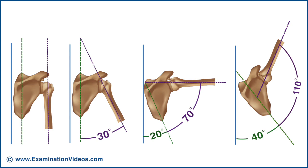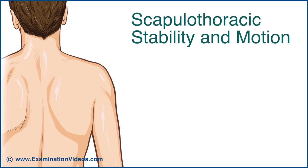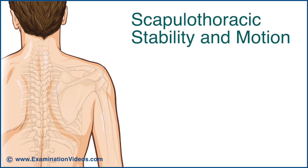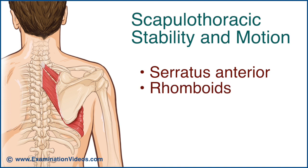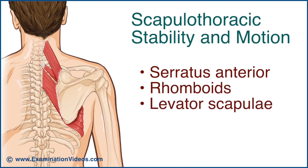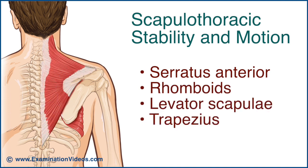Therefore, it's always important to compare the involved side with the uninvolved. The muscles primarily responsible for scapulothoracic stability in motion are serratus anterior, rhomboids, levator scapula, and trapezius.